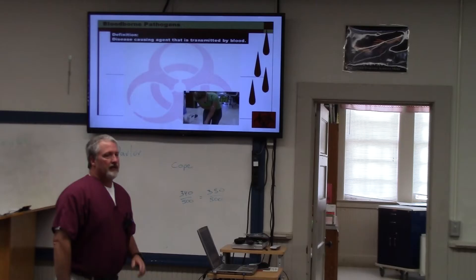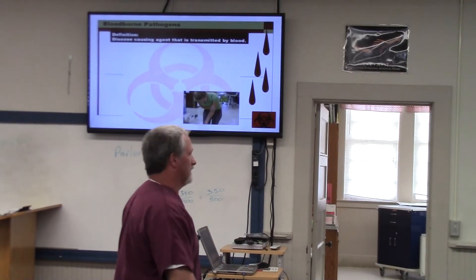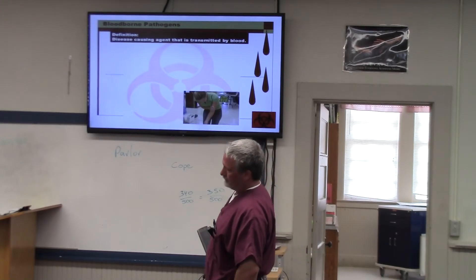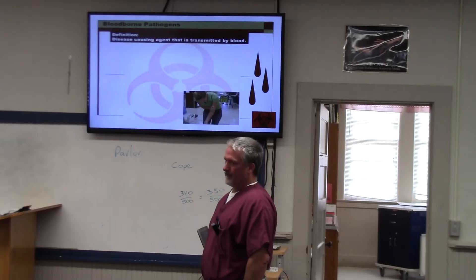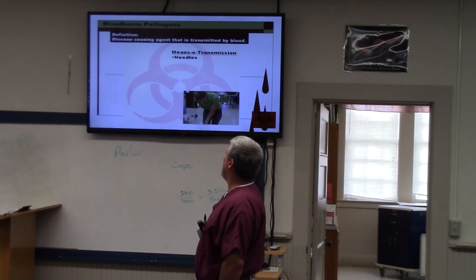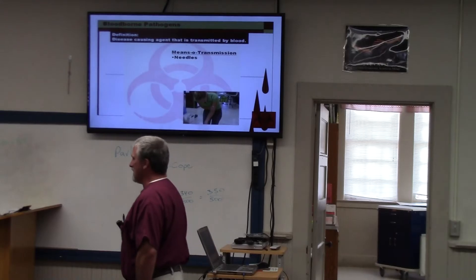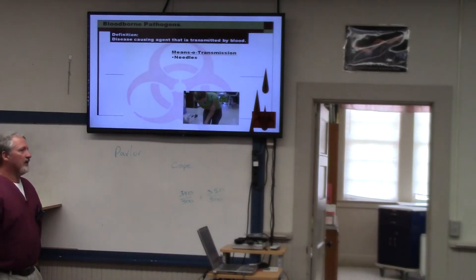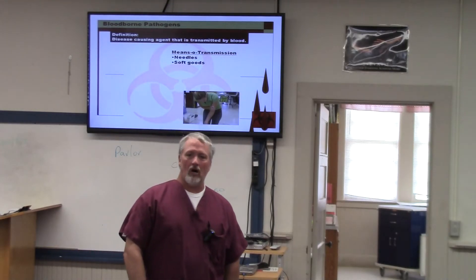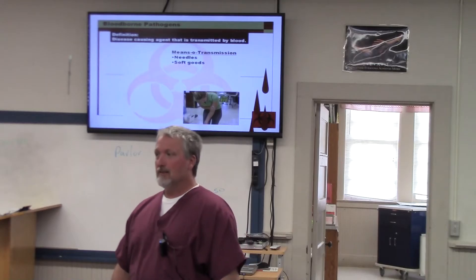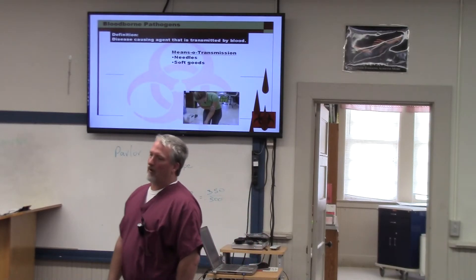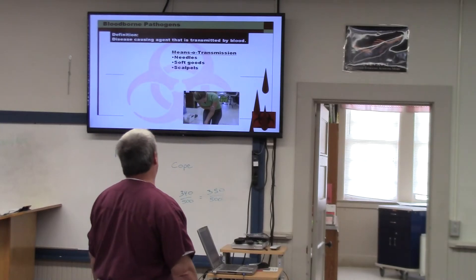Blood-borne pathogens — obviously that means any disease or disorder that can be transmitted by way of blood, though it can also be transmitted by other bodily fluids. Means of transmission: the most common you think about are needles and needle sticks, being carried from one person to another by needles. Soft goods — you don't think about it, but coming in contact with somebody else's gauze or drapes that have become soiled is still a means of transmission. Scalpels, obviously, and dental materials like wires, braces, and partials.